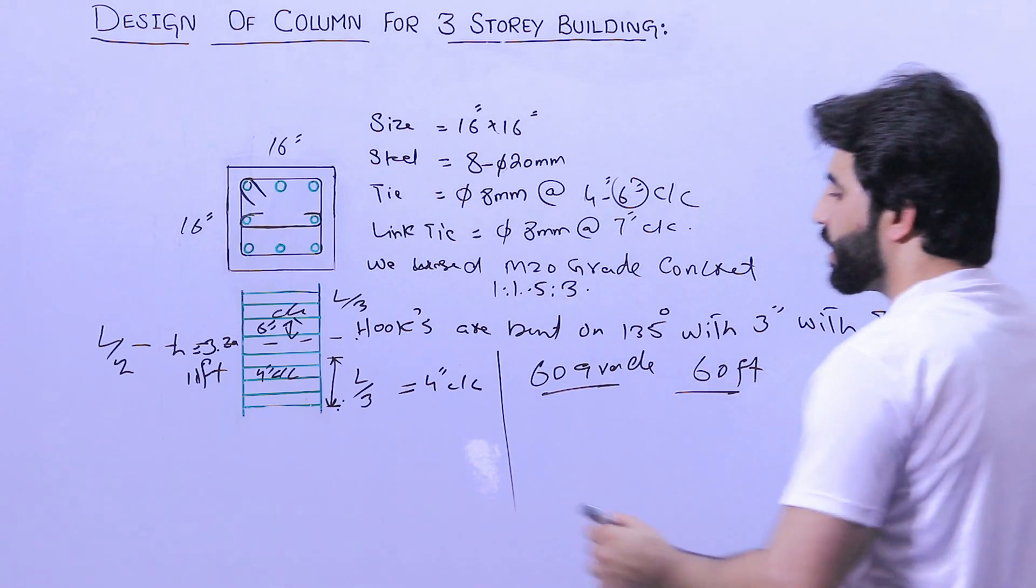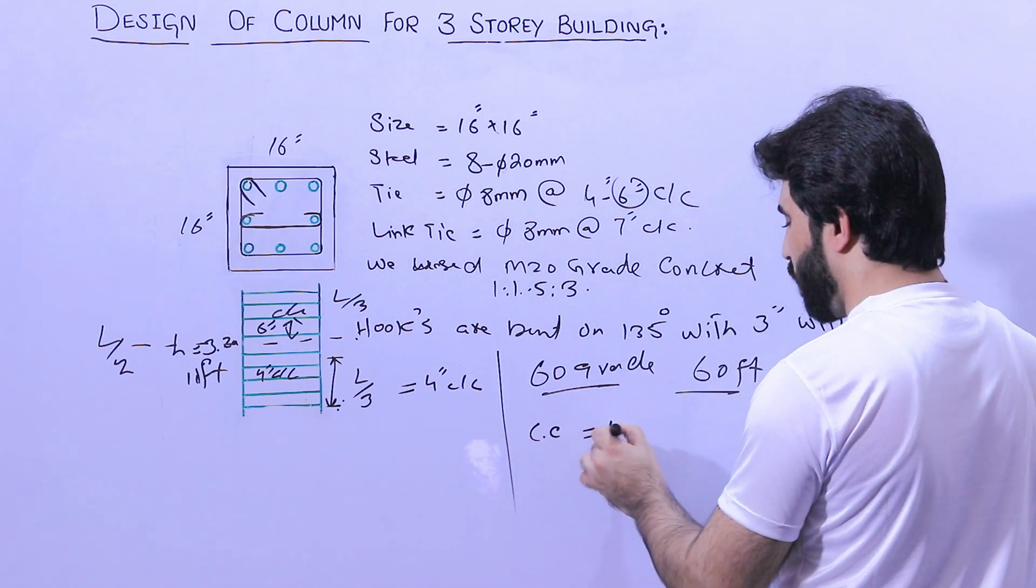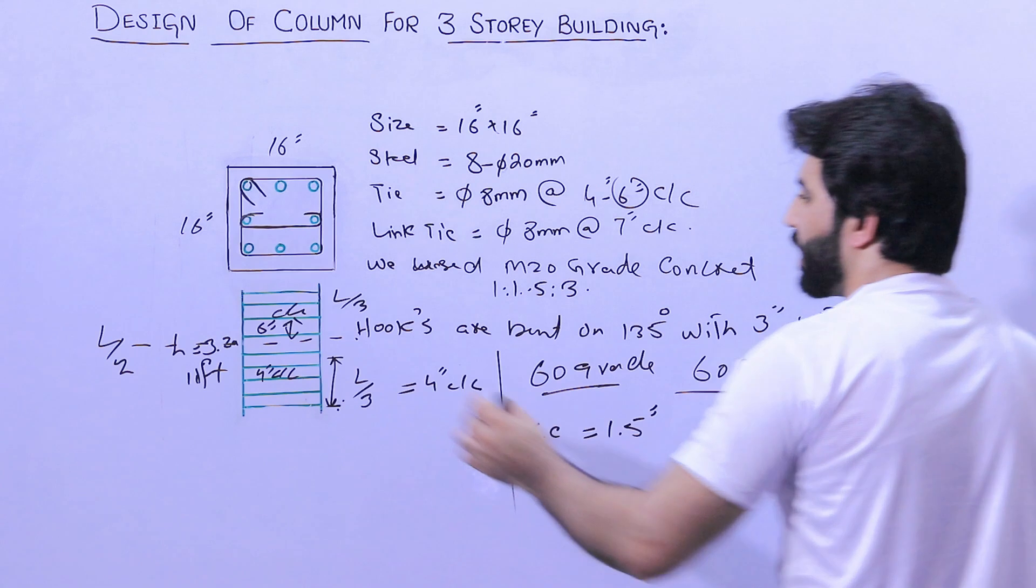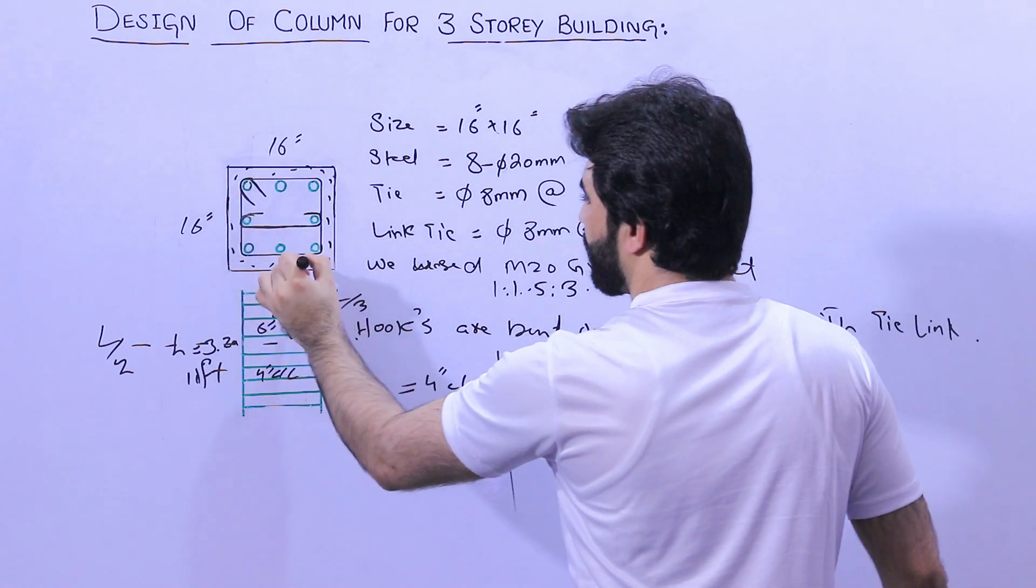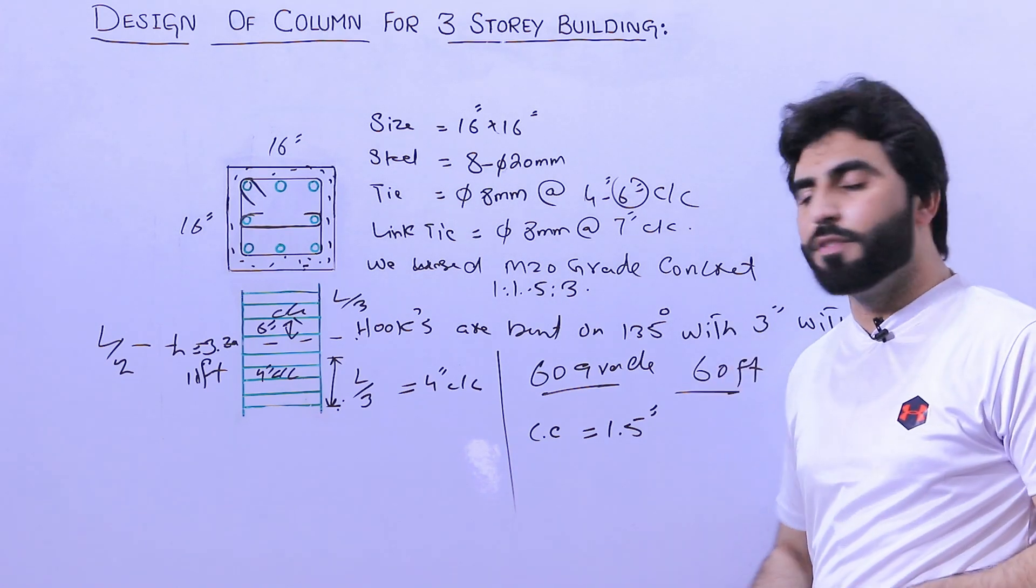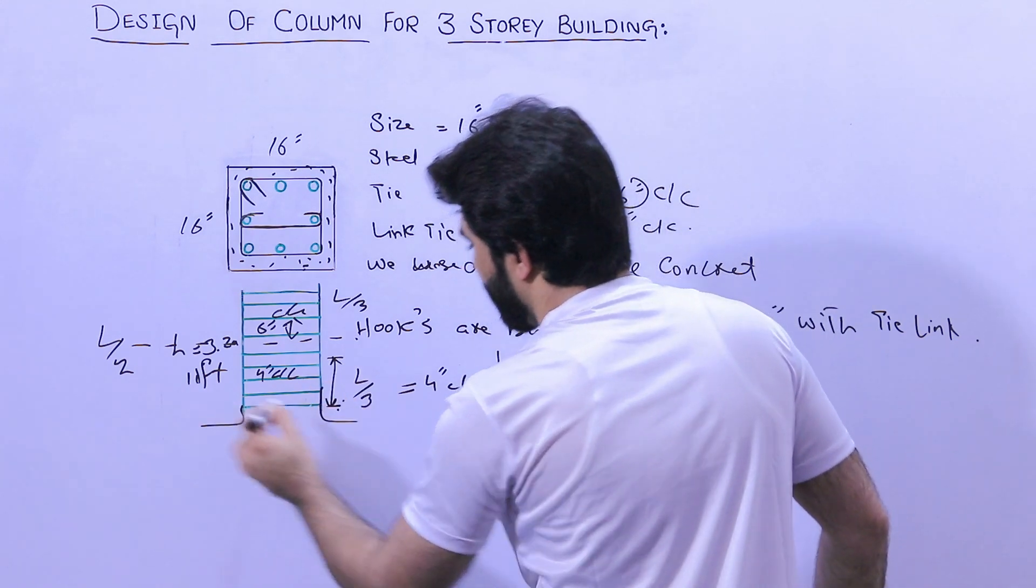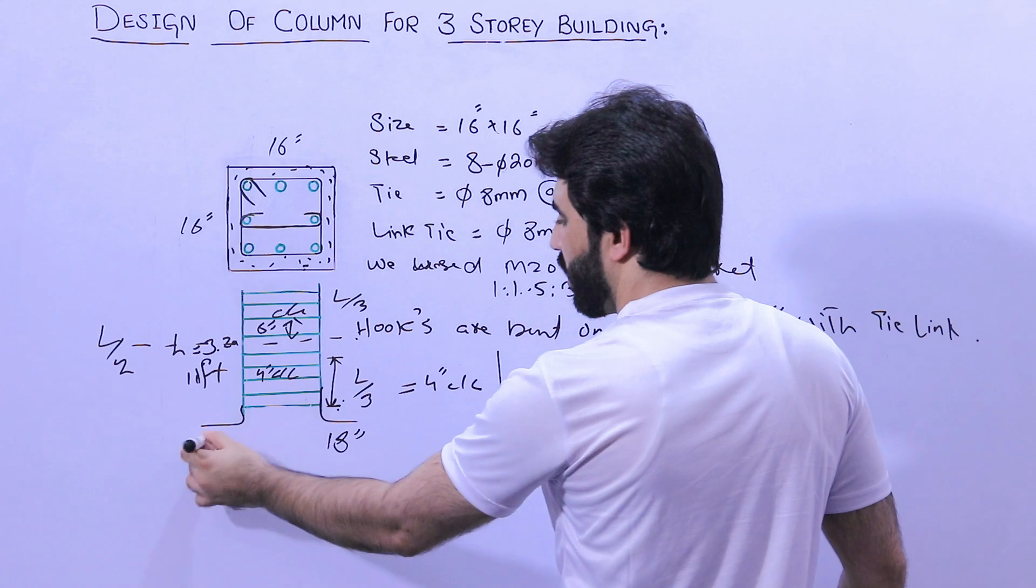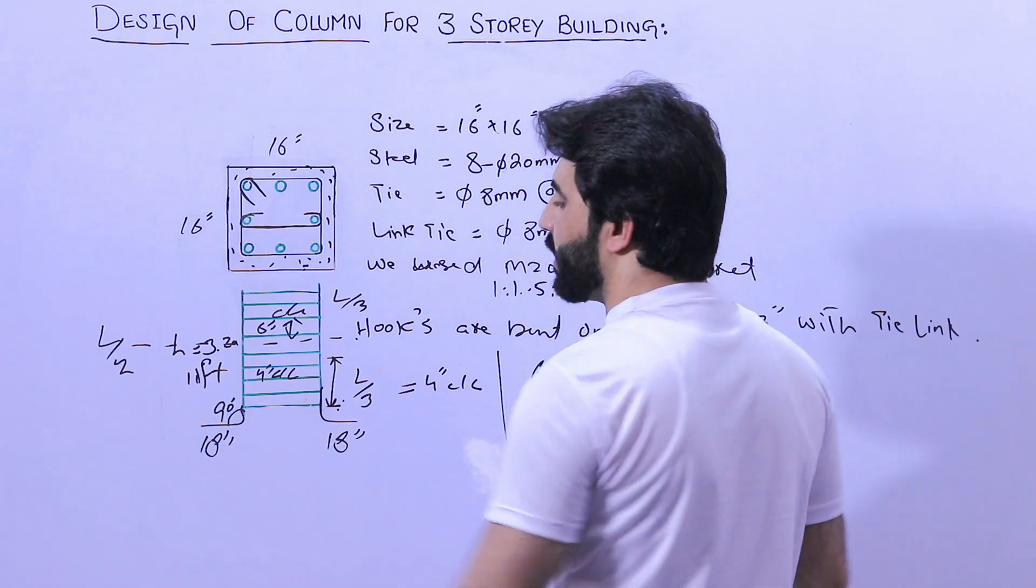These are the details. Next, we used here concrete cover, it was 1.5 inches for all sides. But at the bottom on the top of the footing, you can see here these are the legs. These legs length was 18 inches, it was also 18 inches and it was bent on 90 degrees.